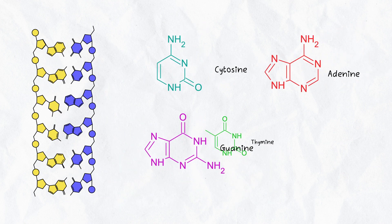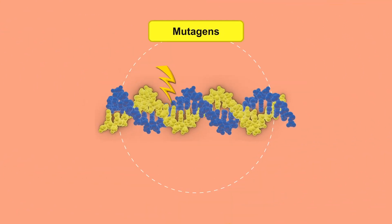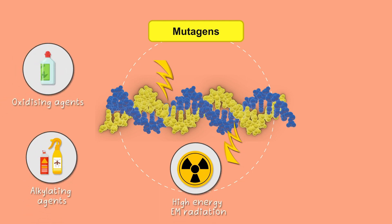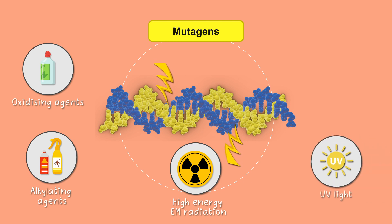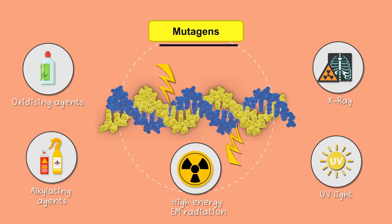There are four types of bases present in DNA: cytosine, guanine, adenine, and thymine. However, sometimes DNA gets damaged by interaction with external molecules like oxidizing agents, alkylating agents, or with high-energy electromagnetic radiation such as ultraviolet light and X-rays. These external damaging factors are called mutagens.